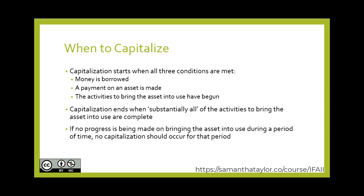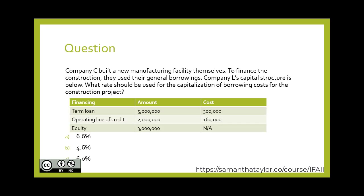Let's take a look at a question. Company C built a new manufacturing facility themselves. To finance this construction, they used their general borrowings. Company L's capital structure is below, including a term loan in the amount of 500,000. What rate should be used for the capitalization of borrowing costs for the construction project?